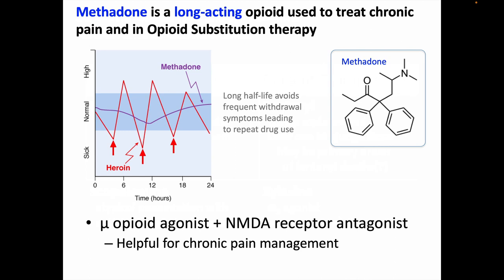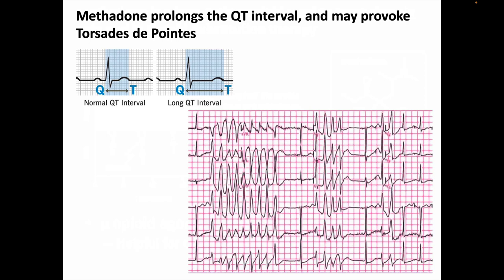Methadone is a long-acting opioid used to treat chronic pain and for opioid substitution therapy. The graph in the upper left depicts how an opioid-dependent person might feel. Heroin has a very short half-life, so the user is frequently dipping down toward withdrawal and feels compelled to take another dose. But with methadone's longer half-life, those swings are slurred out, such that once-daily dosing can prevent withdrawal and the urge to use non-scheduled opioids. In addition to mu-opioid agonism, methadone is also an NMDA receptor antagonist, which is helpful for chronic pain management. Methadone also prolongs the QT interval and may provoke arrhythmias — here we see an EKG from a methadone patient with Torsade de Pointes, and this might explain an uptick in risk of sudden death seen in patients recently started on methadone.